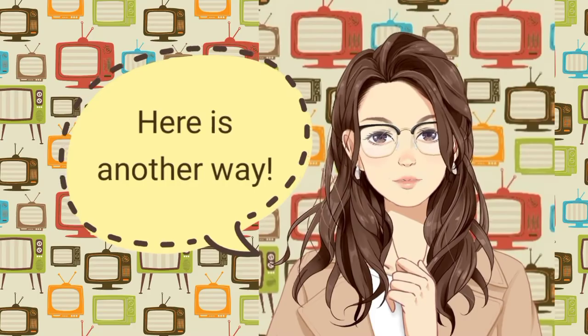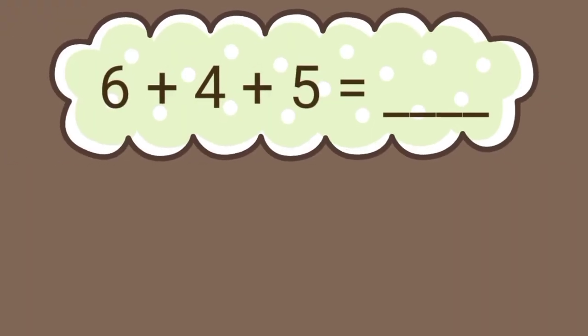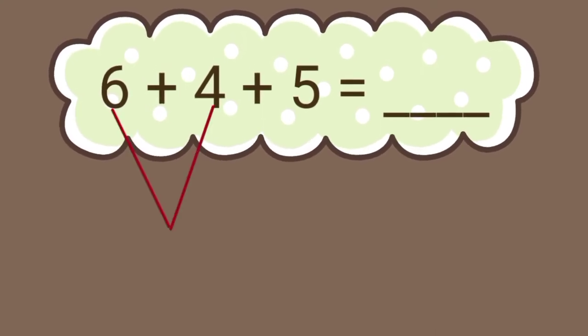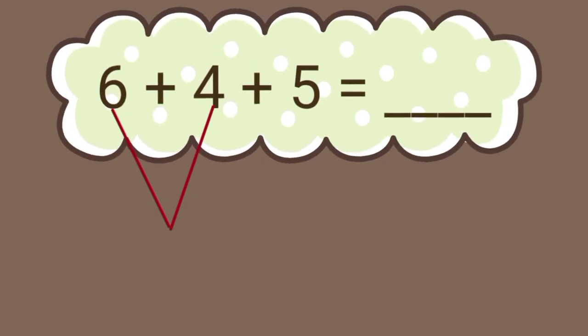Here is another way. To find the sum, first let's find the pair with the sum of 10. In this case, 6 and 4. 6 and 4 is 10.